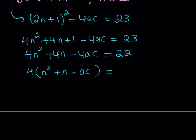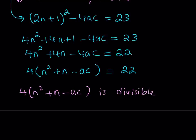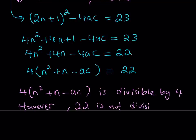This is super important from a number theory perspective because if you look at the left-hand side, you can factor the 4 out. It means that the expression on the left-hand side is a multiple of 4, which means it is divisible by 4. So 4 times the quantity n squared plus n minus ac is divisible by 4. However, 22 is not divisible by 4 — because 24 is a multiple of 4, 20 is a multiple of 4, and 22 is in between. So you get a remainder when you divide 22 by 4.